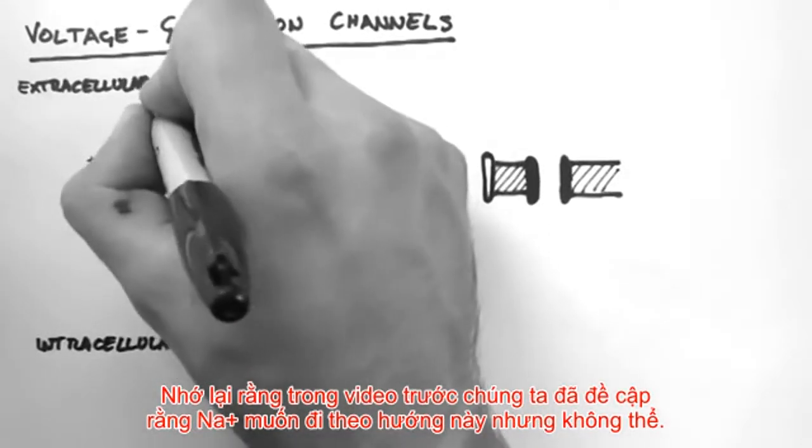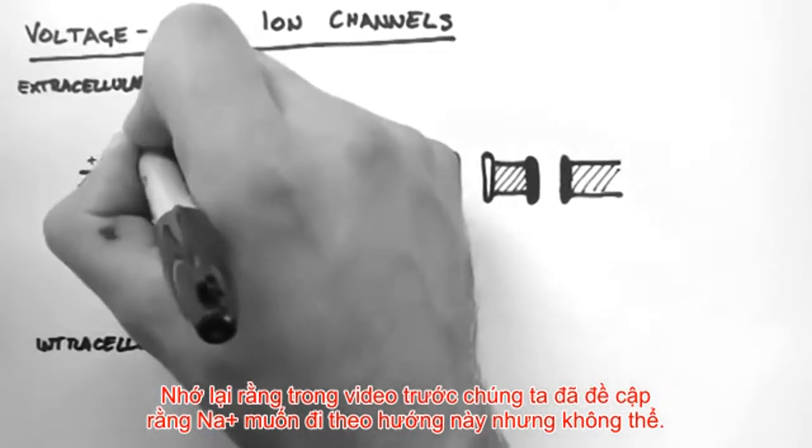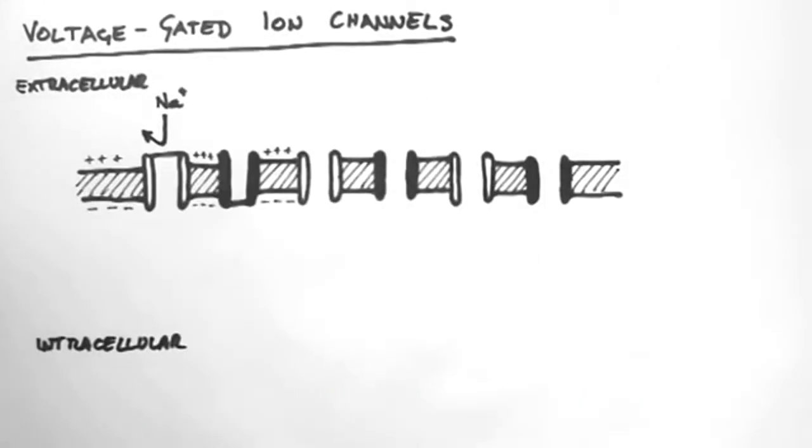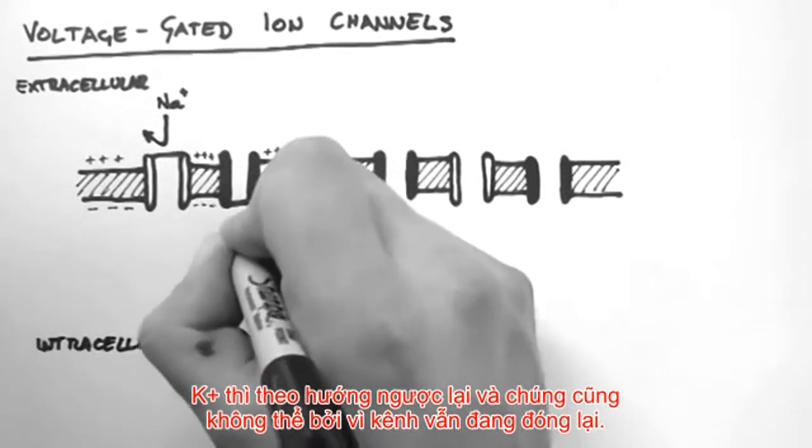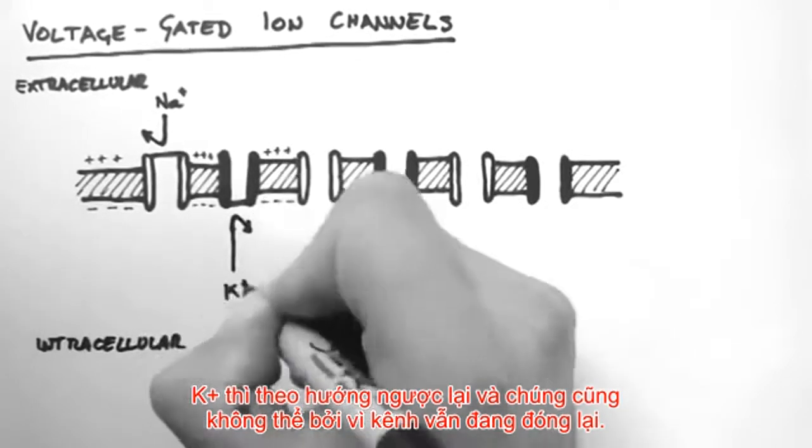Remember in the last tutorial we said that sodium wanted to move this way, but couldn't, and potassium the other way? Well, they still can't because their channels are closed.